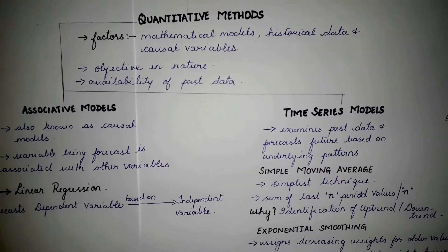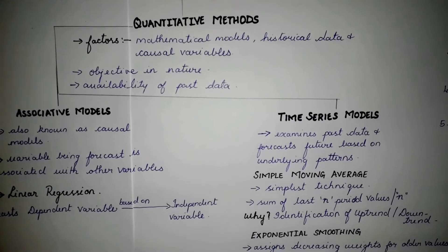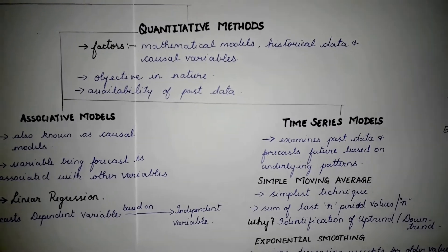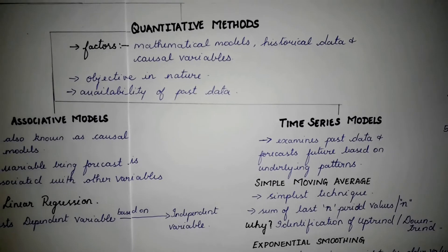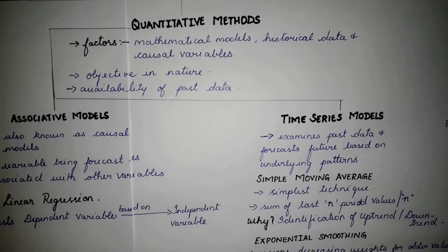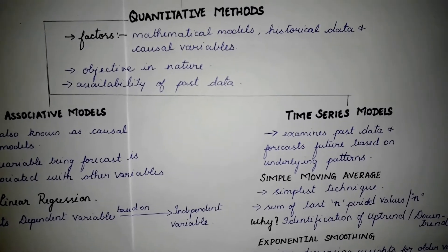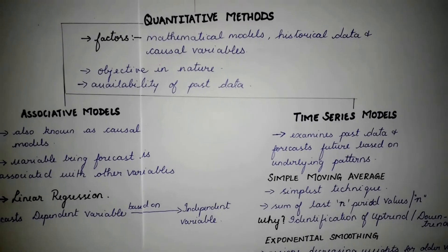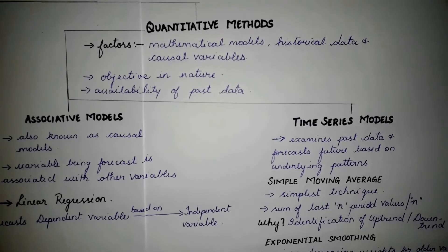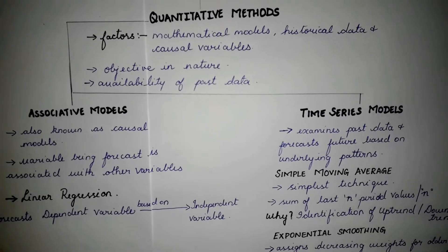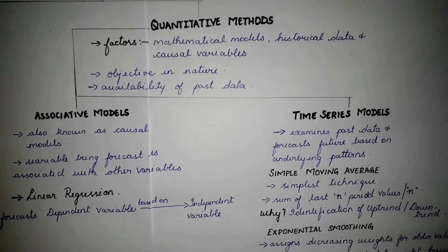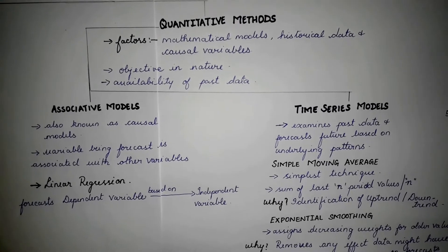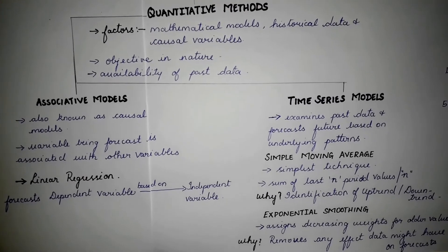Quantitative methods. A forecast value developed using quantitative methods is usually developed with the help of mathematical models, historical data, and causal variables. Quantitative methods are objective in nature and can be used when past data for an event is available. Quantitative methods can be further classified into associative models and time series models.